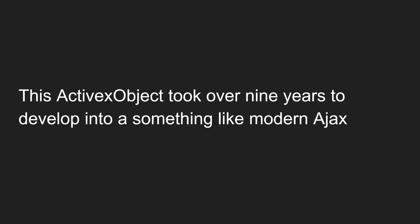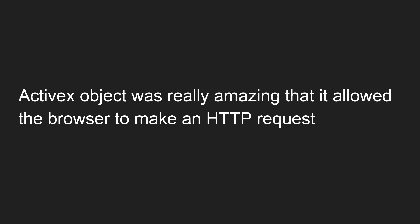The ActiveX object took over nine years to develop into what we now call modern AJAX. The ActiveX object was really amazing because it allowed the browser to make an HTTP request. This meant the browser could get and refresh data on the web without a page reload — that is the main concept behind the ActiveX object. Microsoft developed this solely to overcome the Java dependency in their web apps.